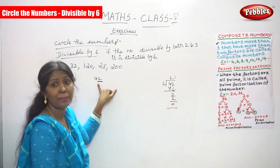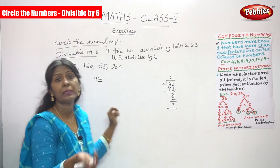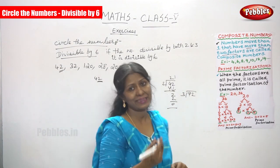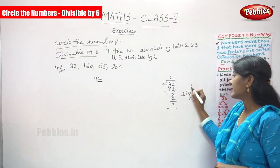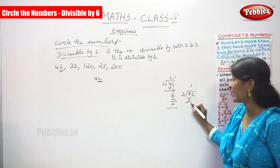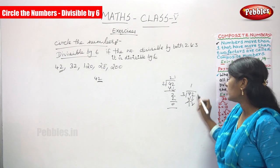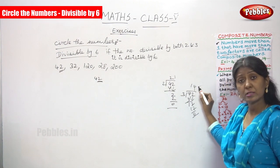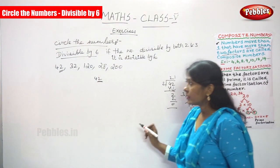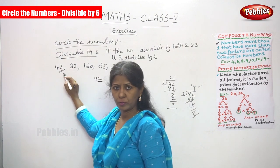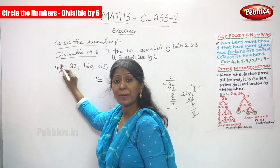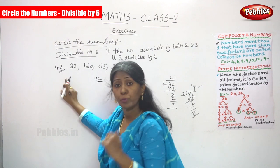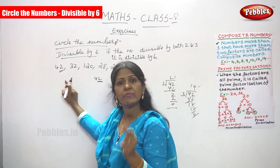Next, 42 is also divisible by 3. Dividing: 1 × 3 = 3, 4 minus 3 = 1, bring down 2, 4 × 3 = 12, giving quotient 14 and remainder 0. So 42 is divisible by both 2 and 3, which means it is divisible by 6. Circle this number.